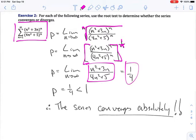So ρ is 1 over 4, which is less than 1. So just like with our ratio test, the series converges absolutely.